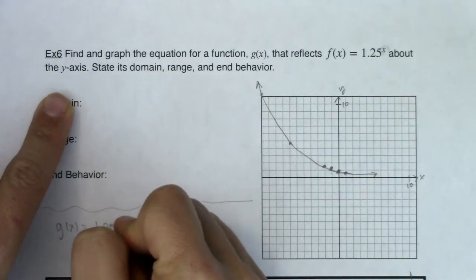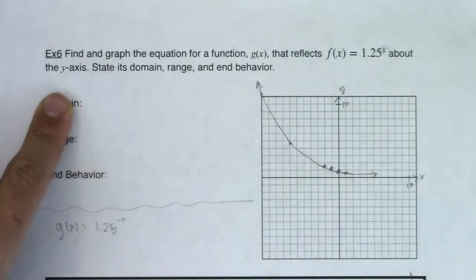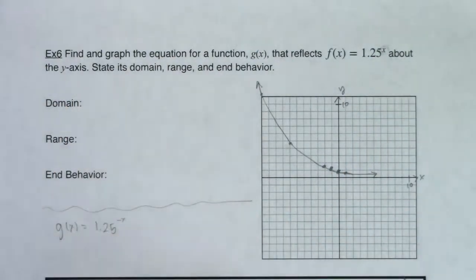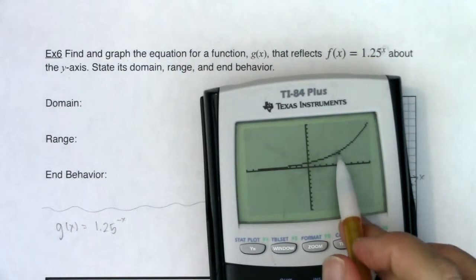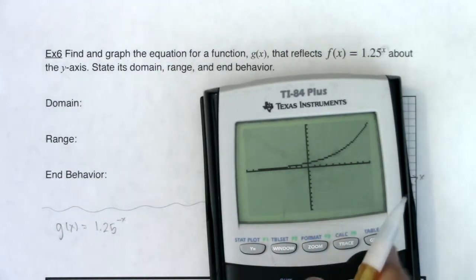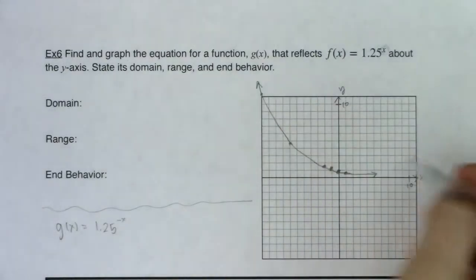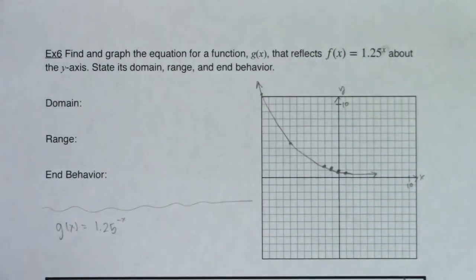So this will become 1.25 to the negative x because all of our x coordinates were having the opposite signs. We said if they were positive x values, they became negative. If they were negative x values, they became positive. So we were changing the sign of those x coordinates. And here's my function. I can see my horizontal asymptote. So let me go graph that, put that in.